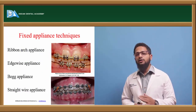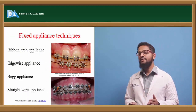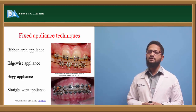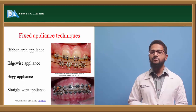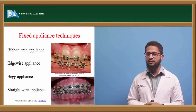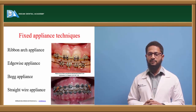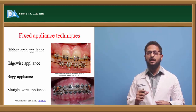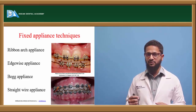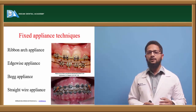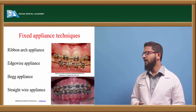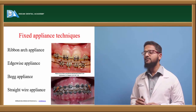Now let us discuss fixed appliance techniques. The first is the ribbon arch appliance. Angle first used the ribbon arch appliance technique, which uses ribbon arch brackets with vertical slots facing incisally or cervically and a round cross-section slot that accepts round wires. Typical tooth movements could be achieved, but major mesiodistal movements were quite difficult, and the ribbon arch technique was soon replaced by the edgewise appliance.